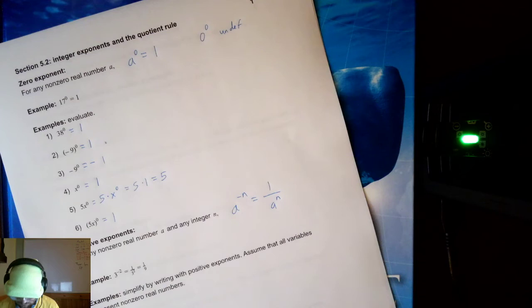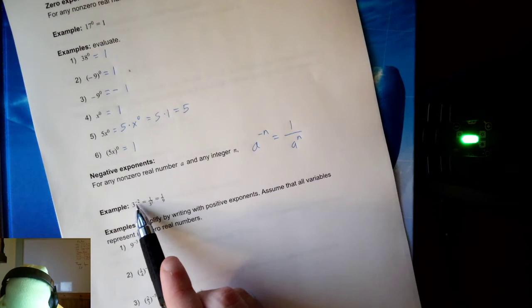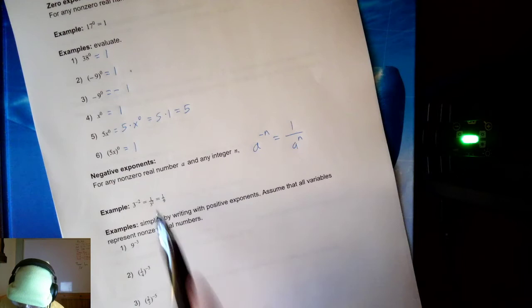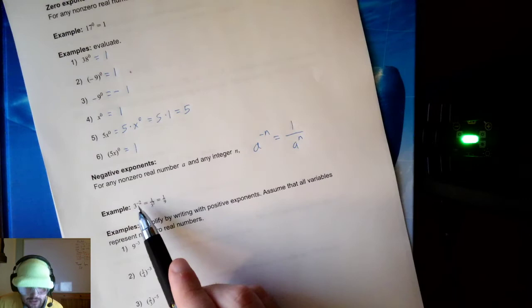Negative exponents move the number to the denominator. For example, three to the negative two is equal to one over three squared, which is one over nine. Three squared is nine. Be careful with negative exponents — a lot of people want three to the negative two to be equal to negative nine. That is not how it works. Three to the negative two is equal to one ninth. Negative exponents give us division problems.